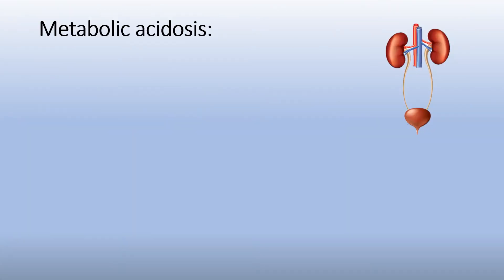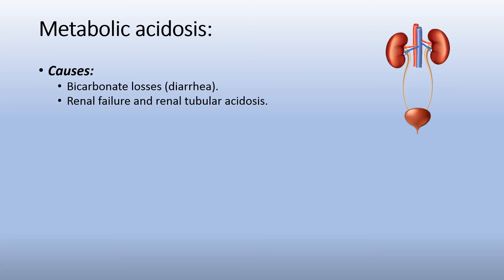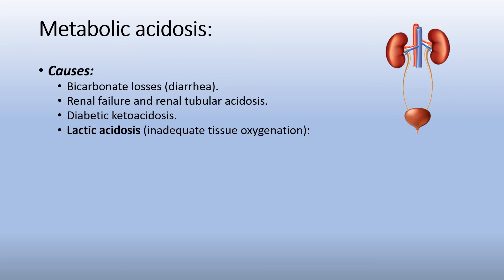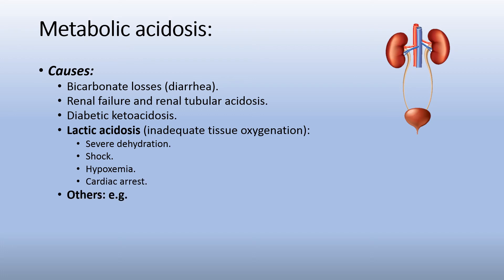Metabolic acidosis causes include bicarbonate losses, for example diarrhea, renal failure and renal tubular acidosis, diabetic ketoacidosis, and lactic acidosis — which is very important — due to inadequate tissue oxygenation, for example severe dehydration, shock, hypoxemia, cardiac arrest, and so on. Other causes include salicylate intoxication, liver failure, and methanol poisoning.